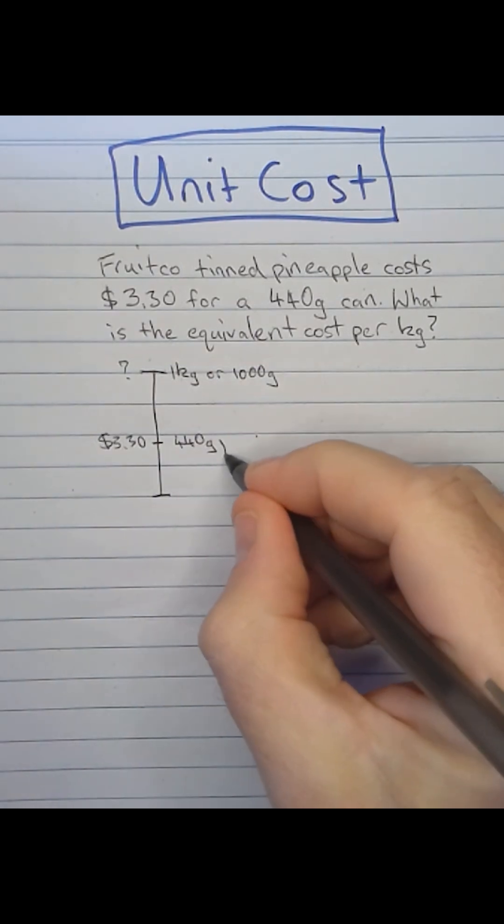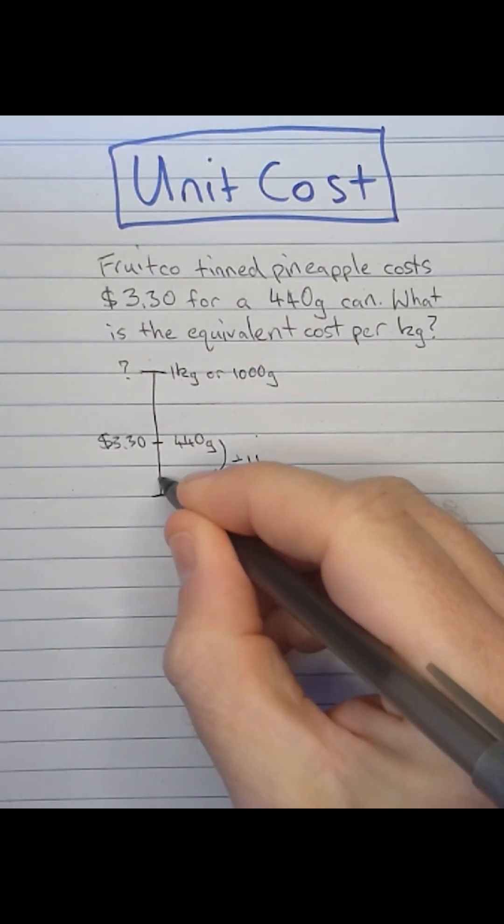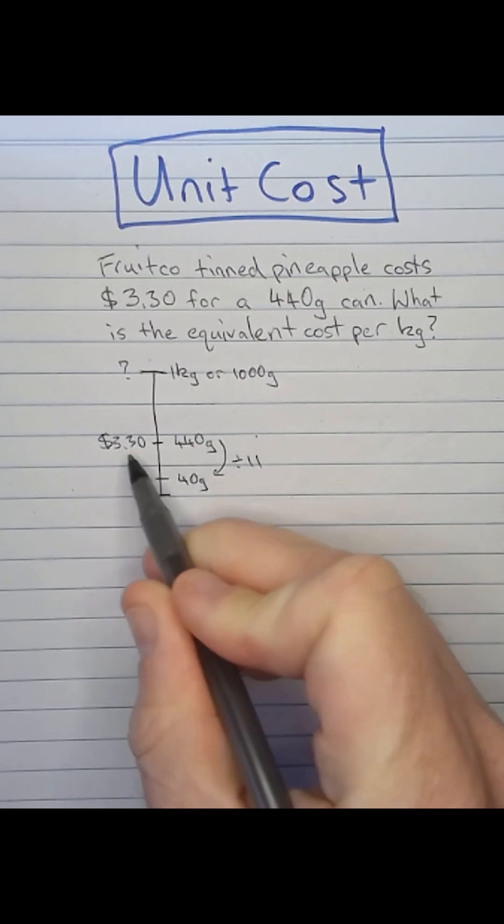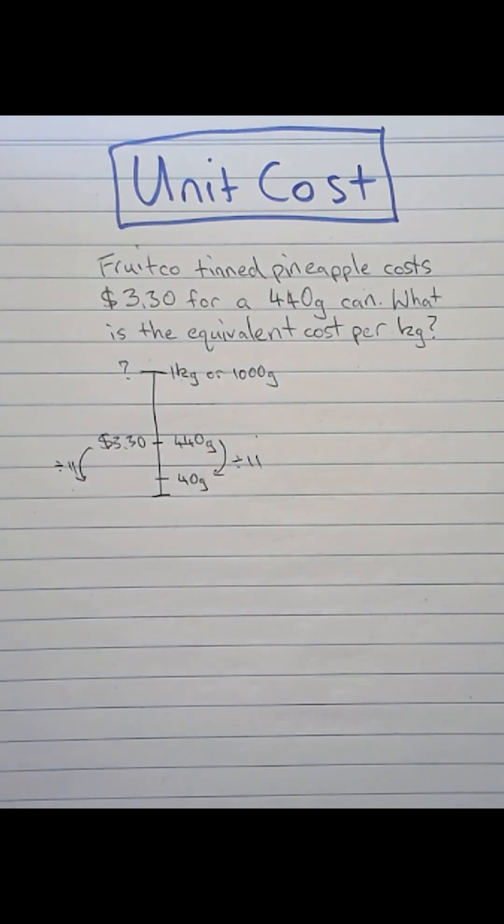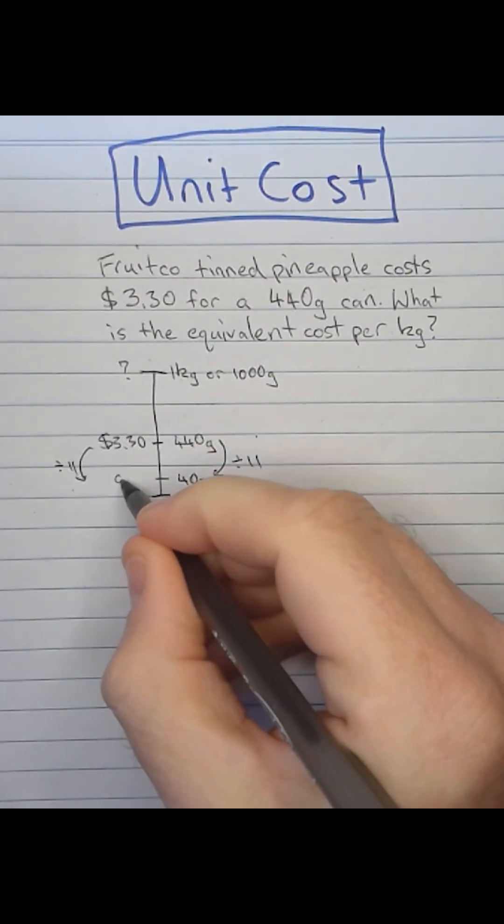So I'm going to divide by 11 to get 40 grams and because of the proportional relationship here I need to divide by 11 on this side, 30 cents, $0.30.